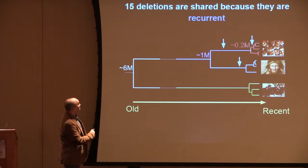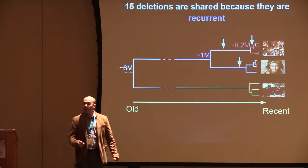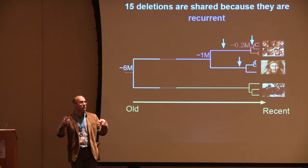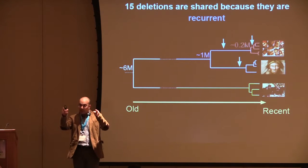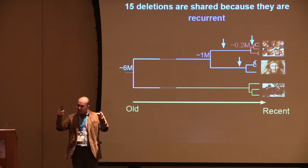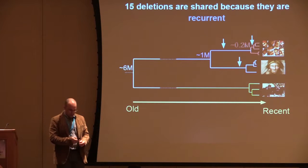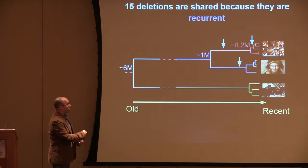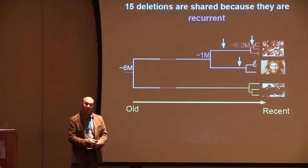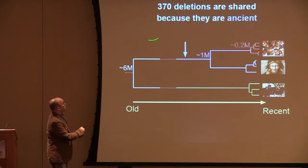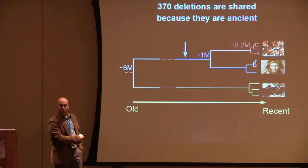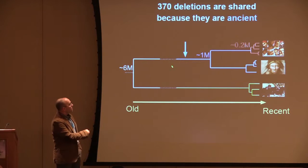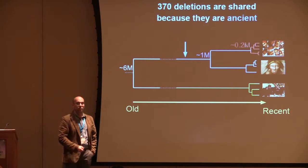We also find 15 deletions that are recurrent. One advantage of working with deletions is that if the exact breakpoints differ between instances, you can safely conclude the events are independent. So we can say 15 are definitely recurrent — occurring at least twice, and perhaps three times, independently in the human and Neanderthal lineages. The majority of the sharing, however, is due to ancestral population structure: the ancestral population was already carrying the variation, which was then maintained for a long time into the human lineage.